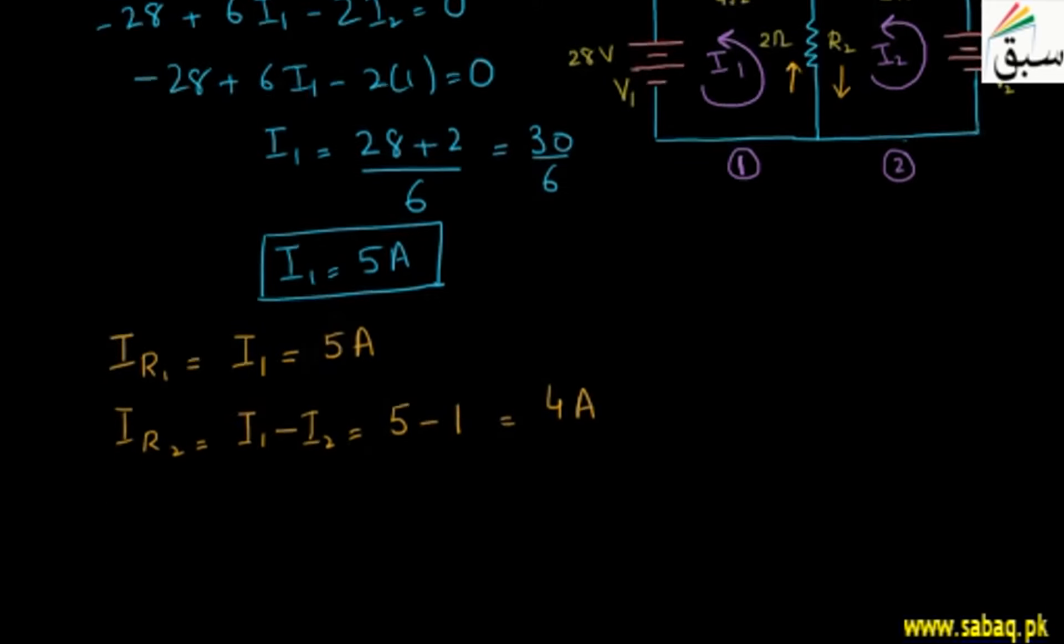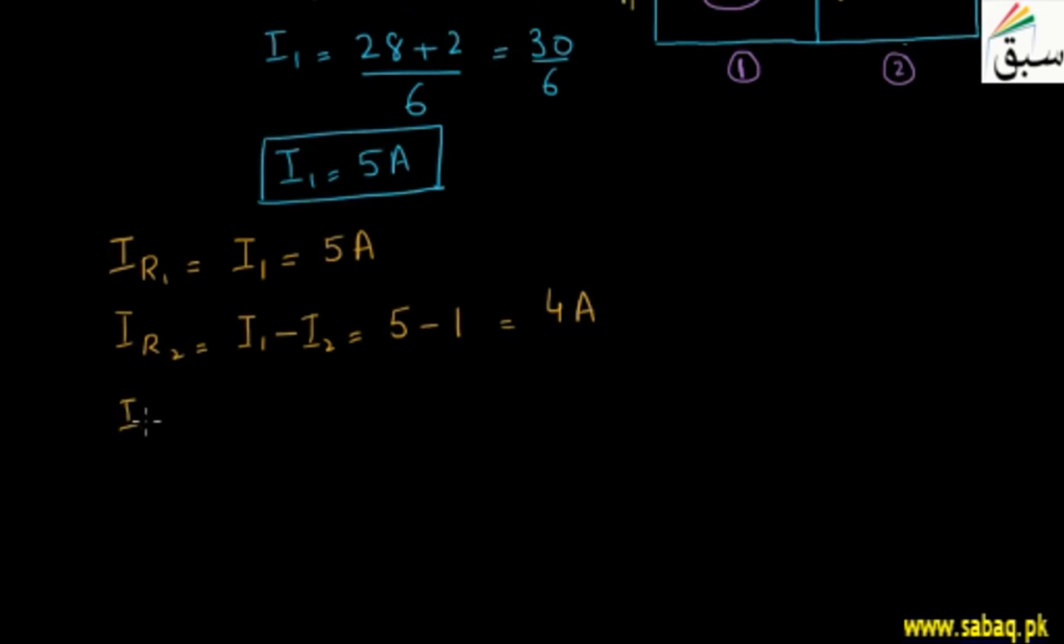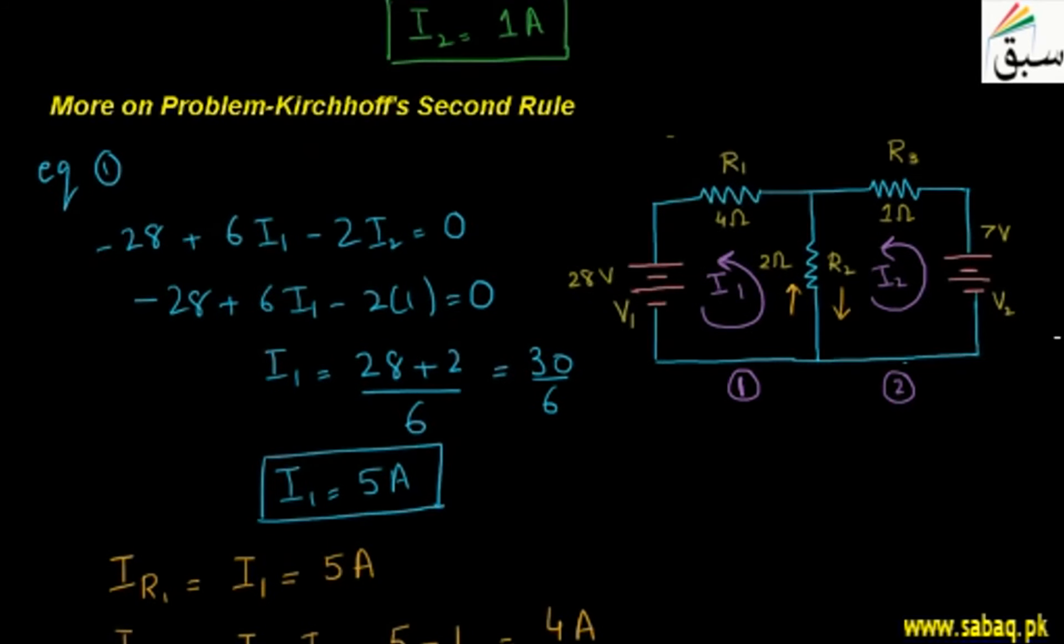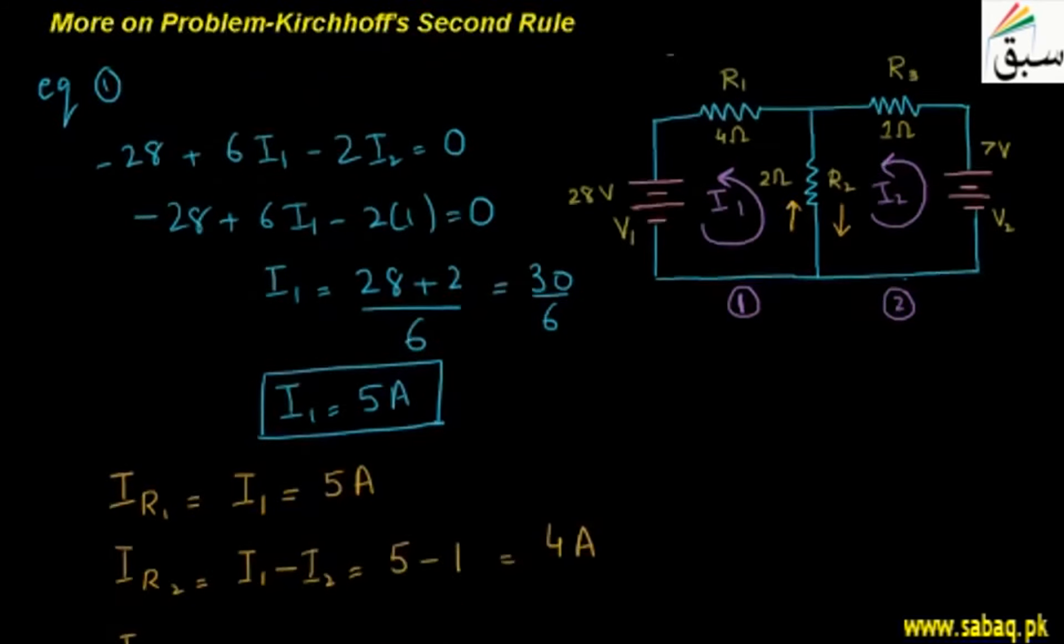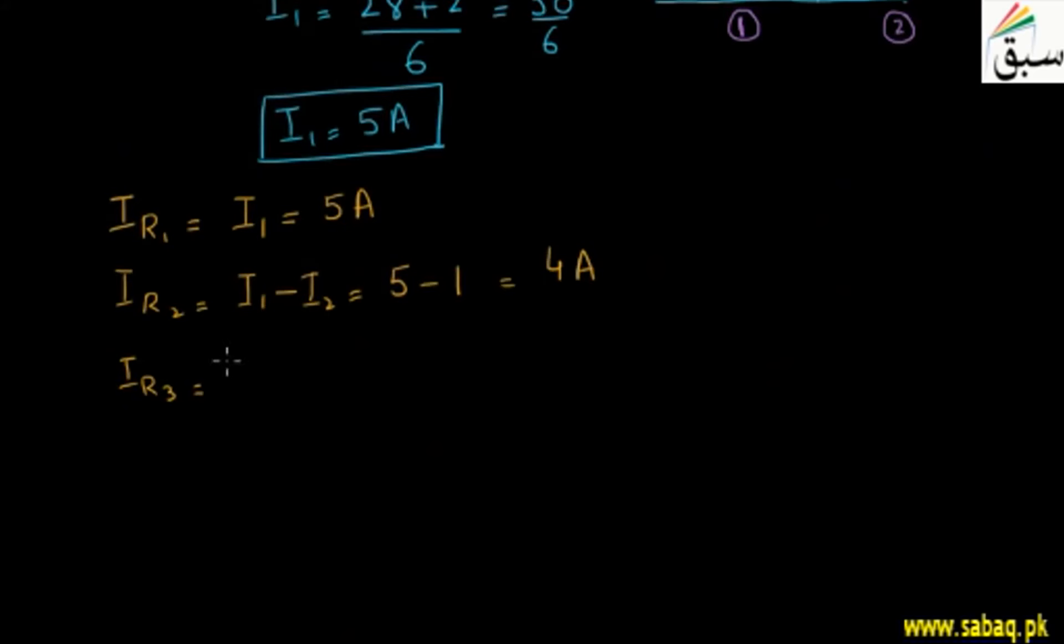That means the current in R2 is 4A. And what about IR3? Just as we discussed here, only one current I2 passes through. So here we have simply I2, which is 1A. That means these three currents we have solved. We have calculated the values.